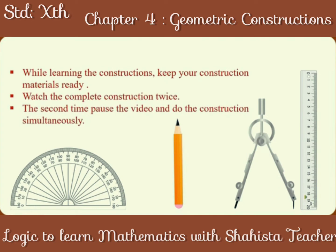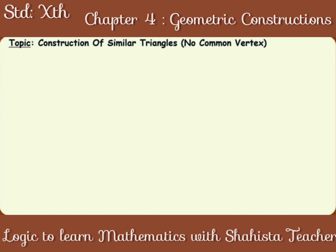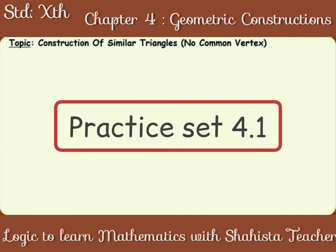First, construction of similar triangles. Type 1: construction of two triangles with no common vertex. Let us see one example.